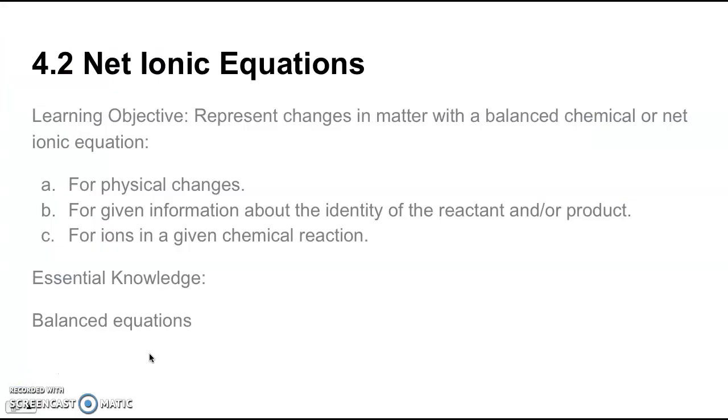Section 4.2 is on Net Ionic Equations. The learning objective here is to represent changes in matter with a balanced chemical or net ionic equation. A for physical changes. B for given information about the identity of the reactants and or products. And C for ions in a given chemical reaction. So the first essential knowledge is just being able to balance equations.